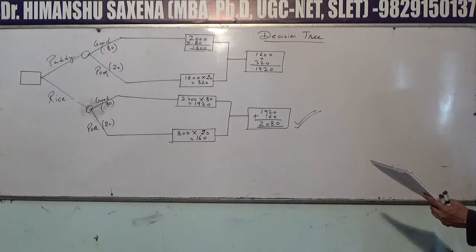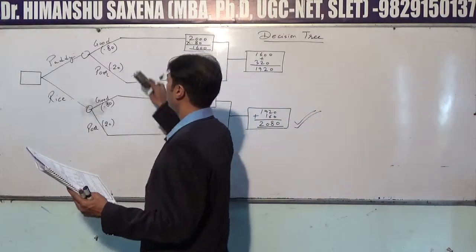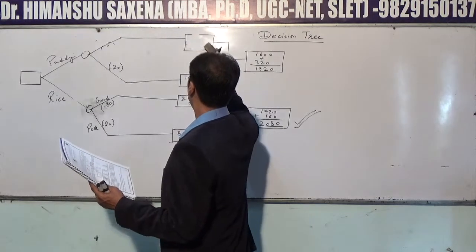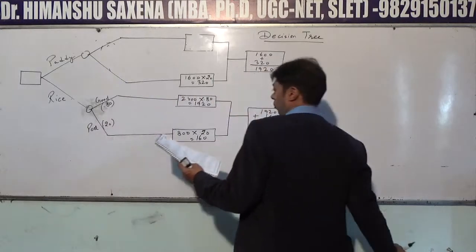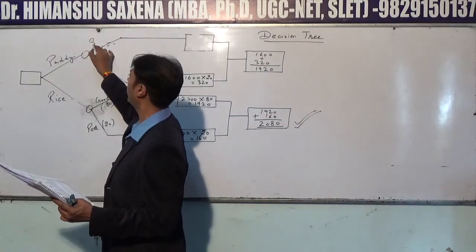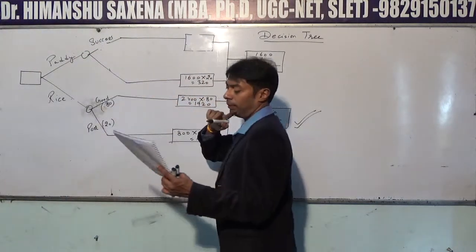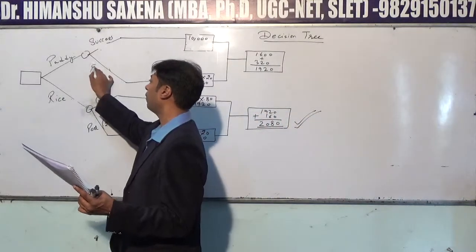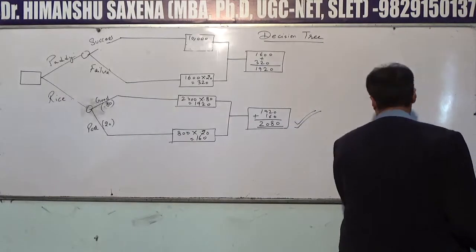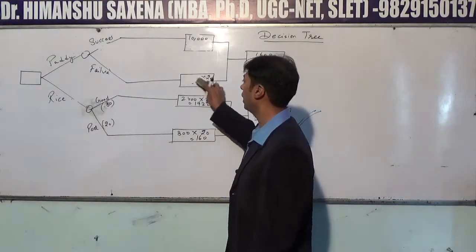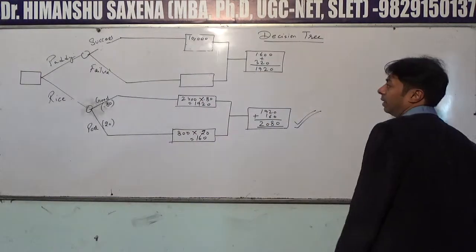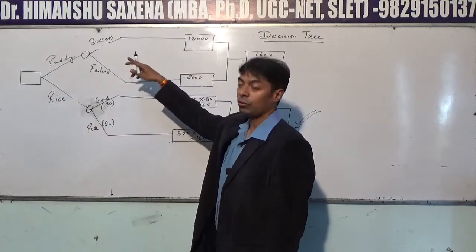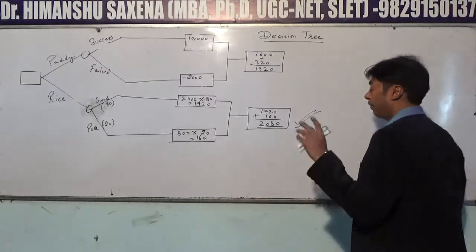If he stocks paddy and it is a success, he hopes to earn a profit of Rs. 10,000. But if the crop is a failure, he will lose Rs. 2,000. Loss is always shown with a minus sign, so the value will be minus 2,000.